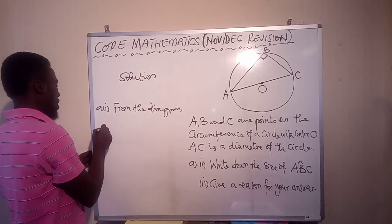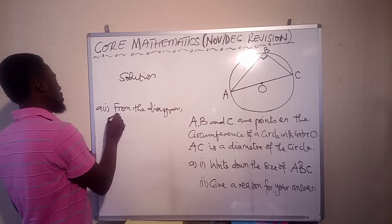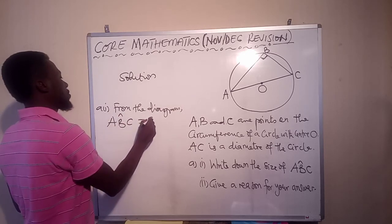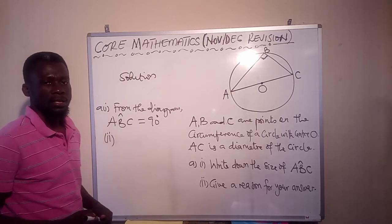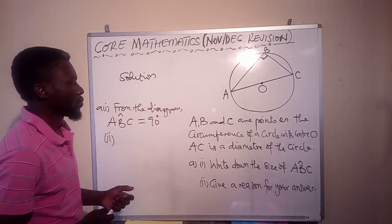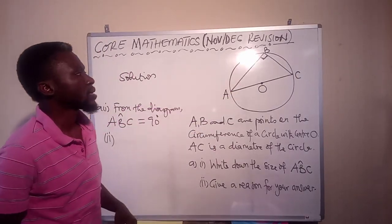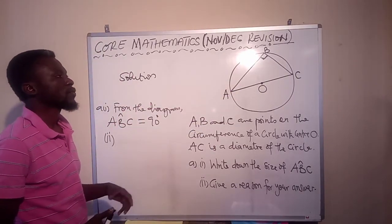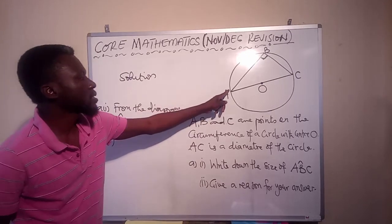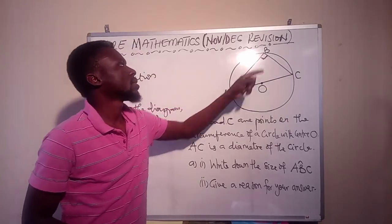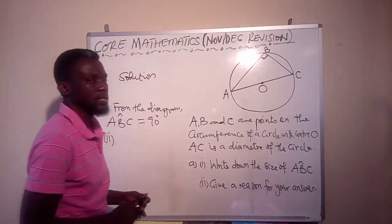So we say that angle ABC is equal to 90 degrees. Then how do we know that? We know that because the angle at the circumference of a semicircle is equal to 90 degrees. So far as these angles touch the circumference of a semicircle, you can see.